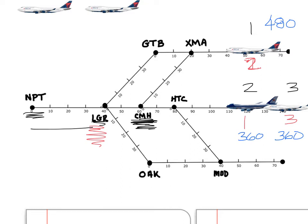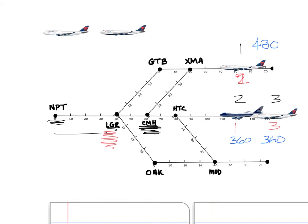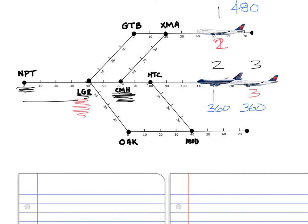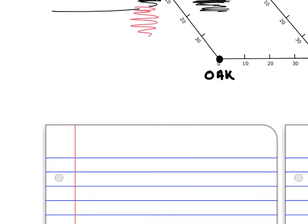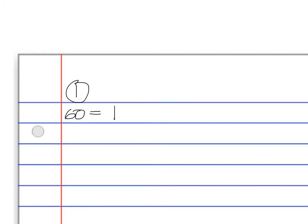Let's see what's happening with plane number one. We have some notebook paper down here at the bottom. Plane number one has a speed of 480 miles per hour — that's the rate. The distance for plane number one from where it's at now to CMH is 60. We don't know the time; that's what we're trying to find. So: distance of 60, speed of 480, and time unknown. 60 over 480 equals t.